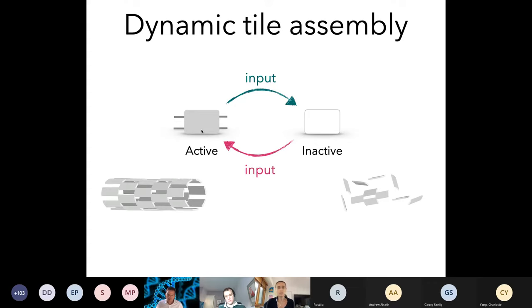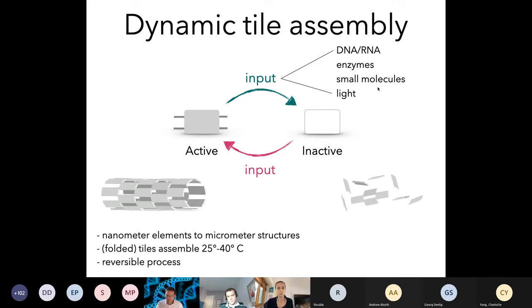As far as inputs, we have explored different things. We have explored inputs that are oligonucleotides, enzymes, small molecules, and even light. The key is we have been able to show you can control assembly of nanotubes and you can achieve assembly of micrometer structures from nanometer elements. Once the tiles are folded, they assemble between 25 and 40 degrees Celsius, and we have been able to show it's a reversible process under certain conditions.